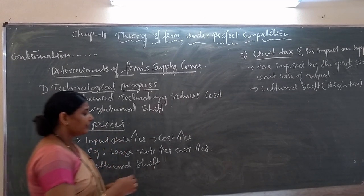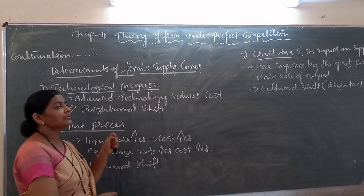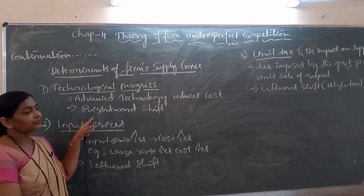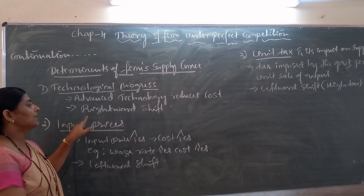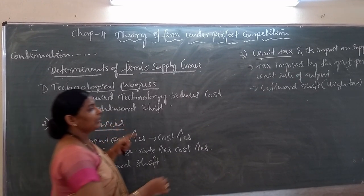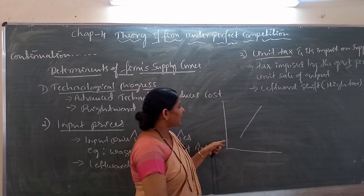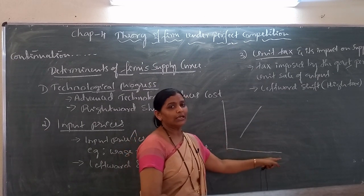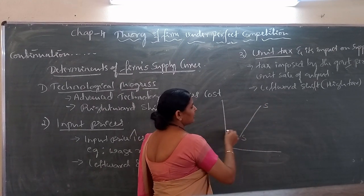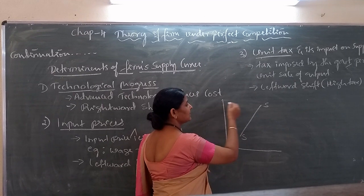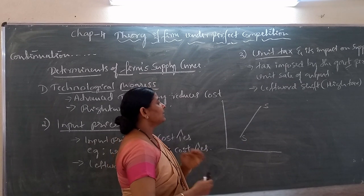If the firm produces more units of output, then it sells more. What happens to the supply curve? Price does not change — price remains constant — then supply curve shifts towards the right. This is the supply curve: if price increases, supply also increases. In that way we can derive the supply curve. If price is less, supply is less; if price is more, supply is also more. So there exists a direct relationship between price and supply.